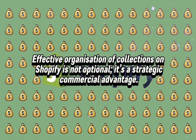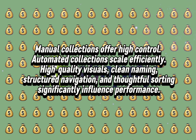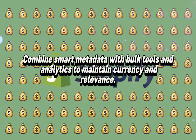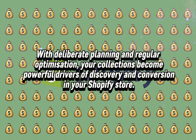Effective organization of collections on Shopify is not optional — it's a strategic commercial advantage. Thoughtful collection setup enhances navigation, improves SEO rankings, strengthens marketing campaigns, drives sales, and increases average order value. Manual collections offer high control; automated collections scale efficiently. High-quality visuals, clean naming, structured navigation, and thoughtful sorting significantly influence performance. Combine smart metadata, bulk tools, and analytics to maintain currency and relevance. Execute audits, monitor results, iterate, and do not leave your collections static. With deliberate planning and regular optimization, your collections become powerful drivers of discovery and conversion in your Shopify store.